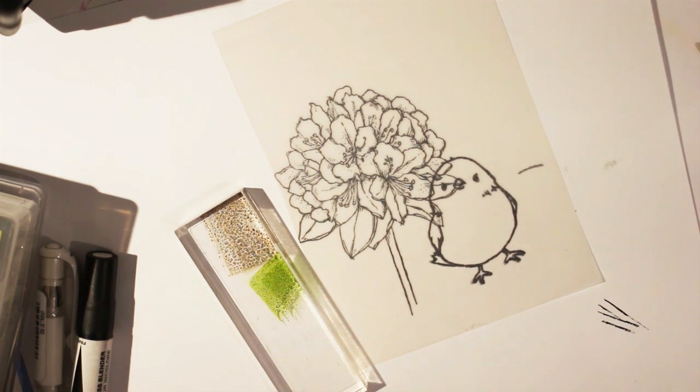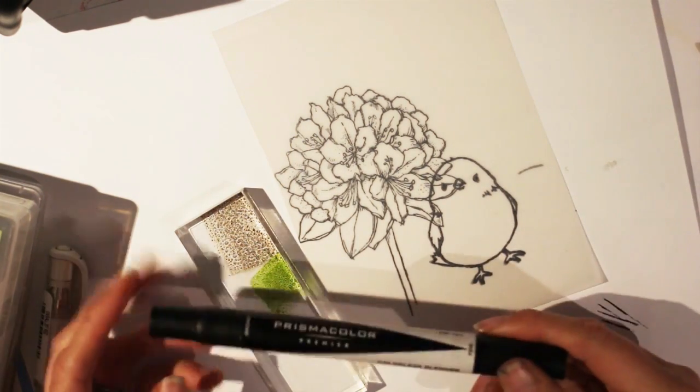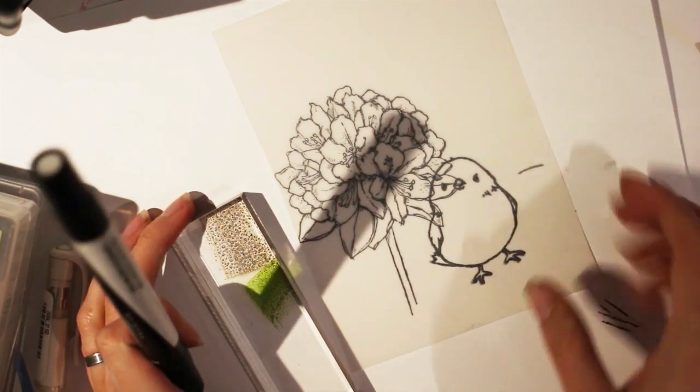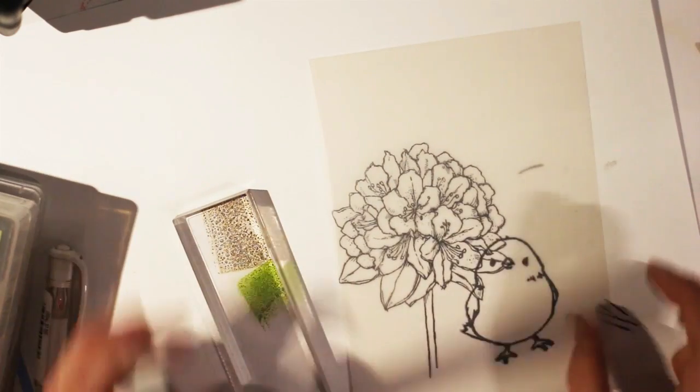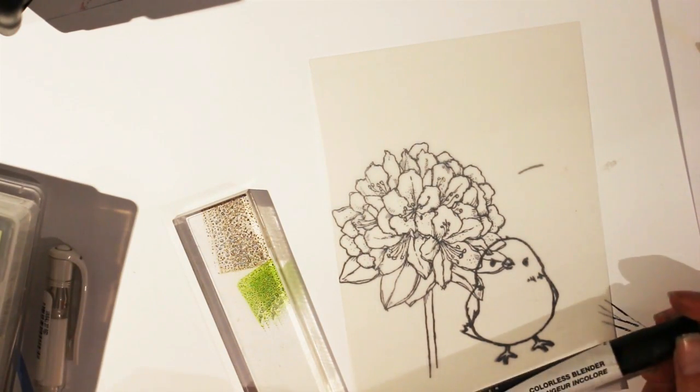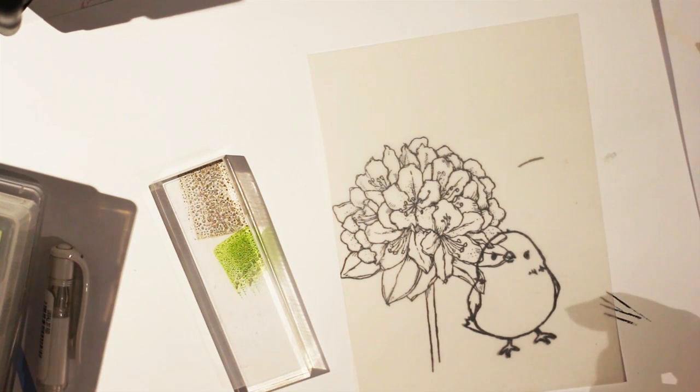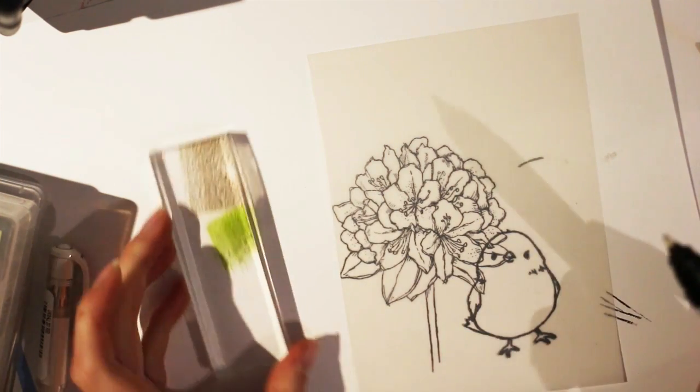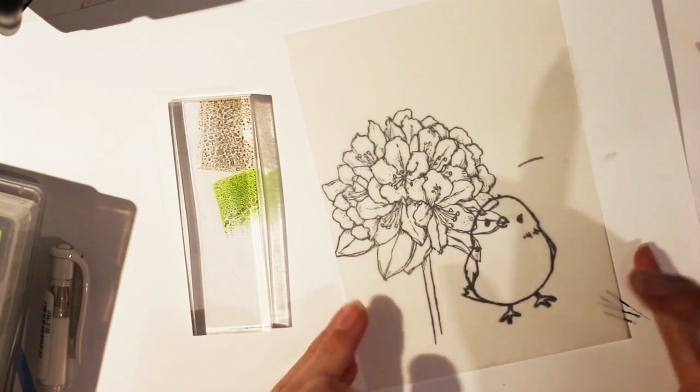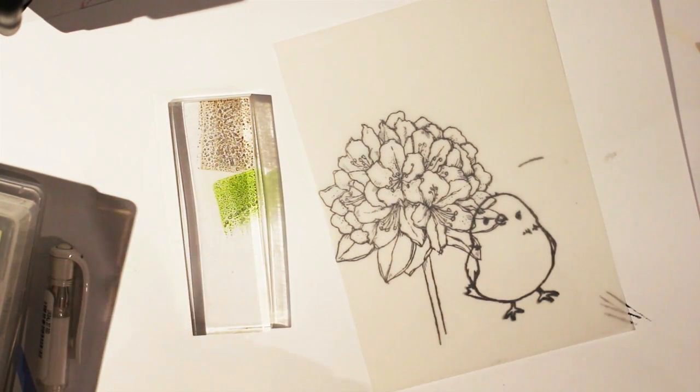There are a few different companies that make colorless blenders. The one I have is by Prisma. But Stamping Up sells a three pack which is probably a better deal because I think Prisma is a fairly expensive brand but I don't remember how much I paid for it. I bought it so long ago. So it's so nice that I'm finally getting around to using it.